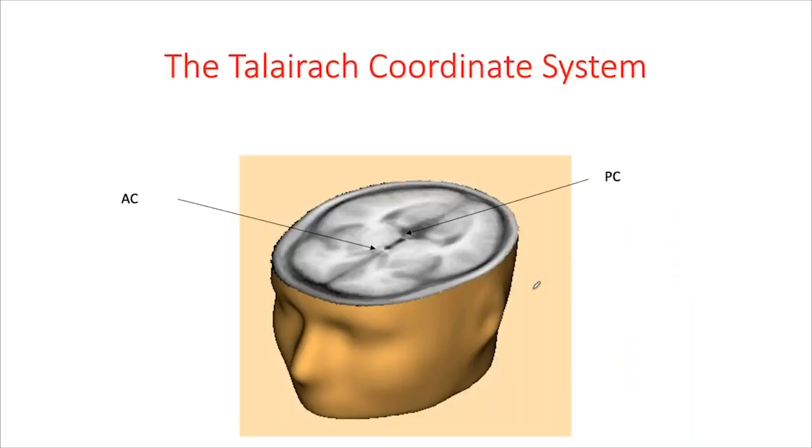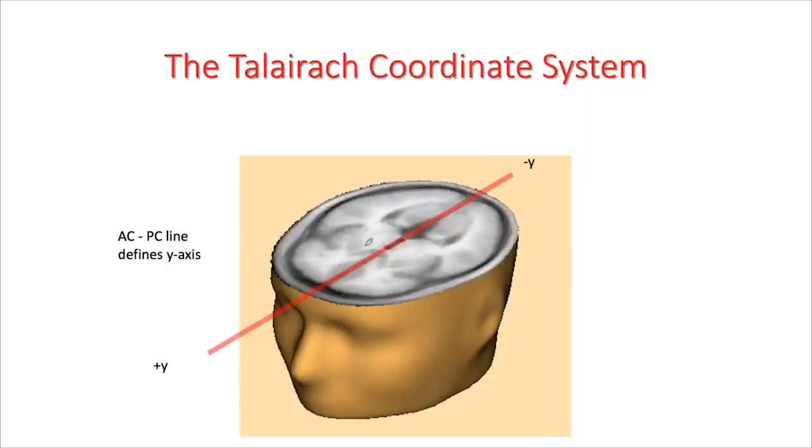To give someone three numbers and pinpoint a location in the brain, we need a coordinate system. A famous surgeon named Talairach created such a coordinate system. They used two anatomical landmarks — the anterior commissure and the posterior commissure — which are clearly identifiable in the brain. They defined these two points and made a line connecting them as the y-axis.